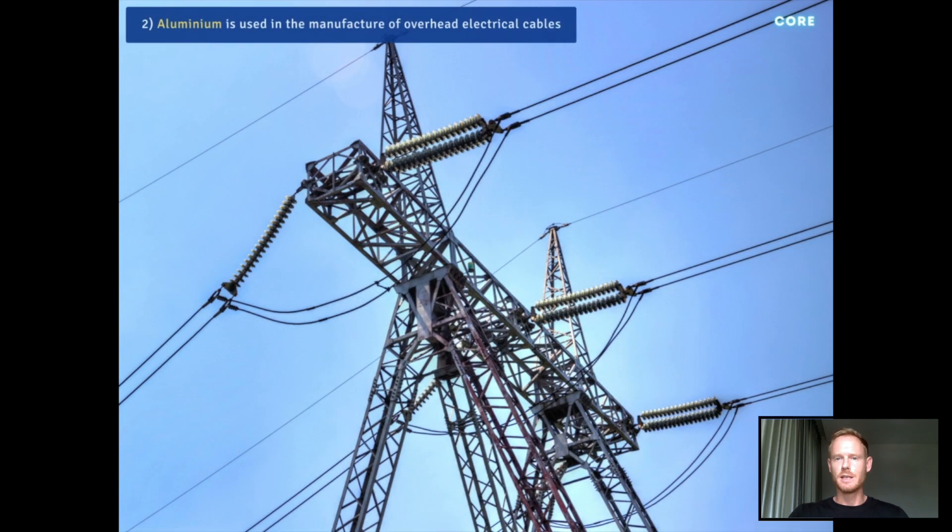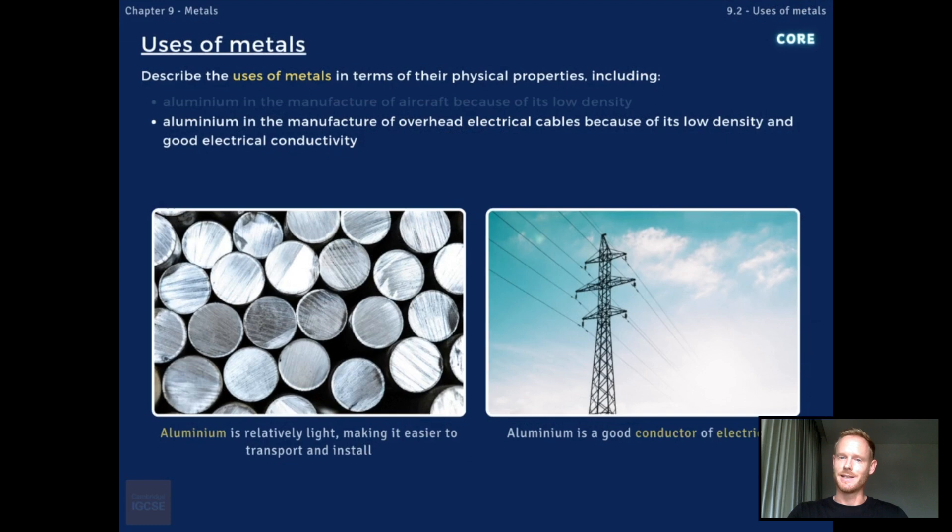Number two, aluminium is used in the manufacture of overhead electrical cables because of its low density and good electrical conductivity. This makes it significantly easier and cheaper to transport and install, compared with heavier materials like copper, and allows electricity to flow efficiently.